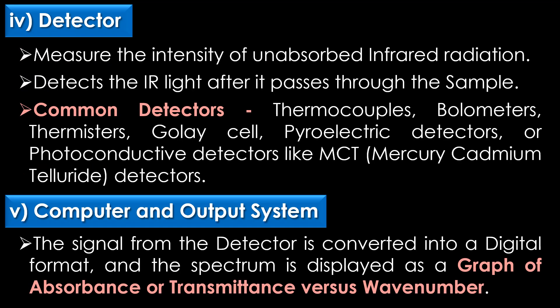The fourth part of IR spectroscopy is the detector. Detectors are used to measure the intensity of unabsorbed infrared radiation and detect the infrared light after it passes through the sample. Common detectors include thermocouples, bolometers, thermistors, Golay cells, pyroelectric detectors, or photoconductive detectors like mercury cadmium telluride (MCT) detectors.